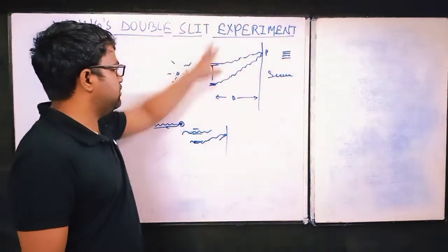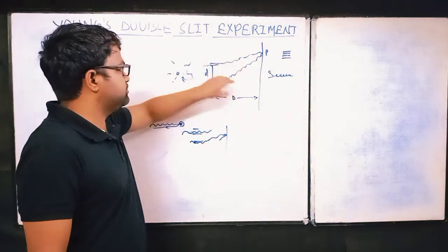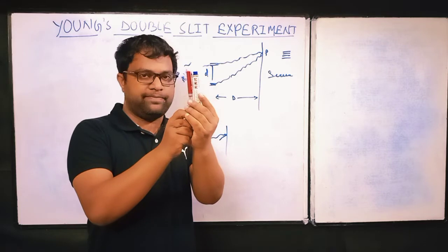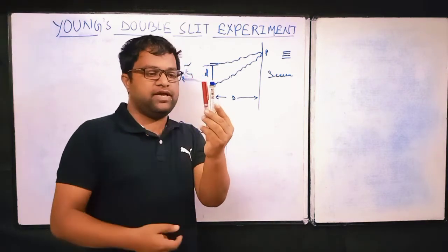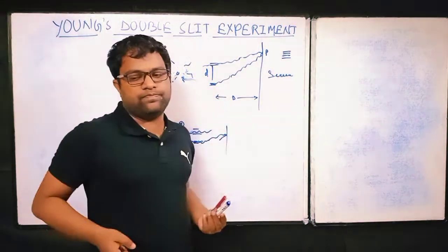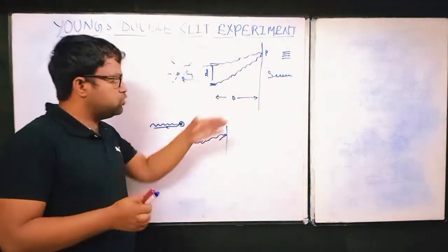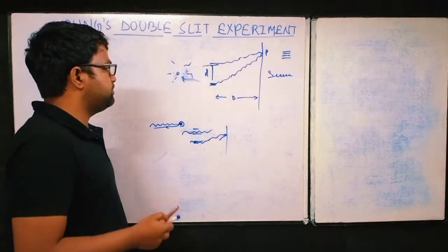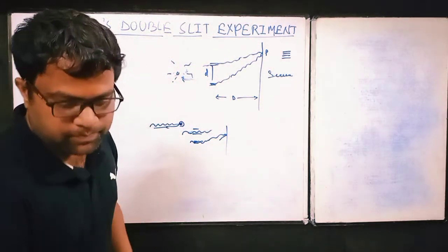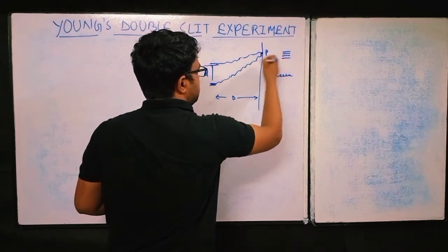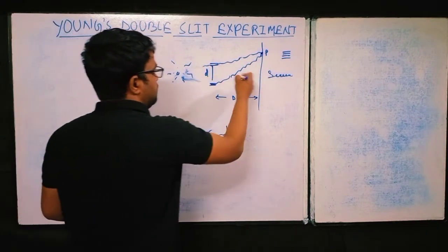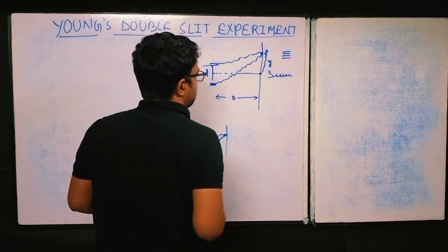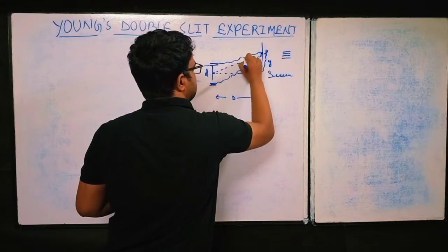This is the setup for Young's experiment. Two slits — very narrow gaps — are placed close together. Light passes through these two narrow gaps. A screen is placed at distance D from the slits. The distance from the center of the screen to a point P is y, and the angle from the center to P is theta. Capital D is much larger than small d, so we consider the rays to be approximately parallel, all making approximately the same angle theta.